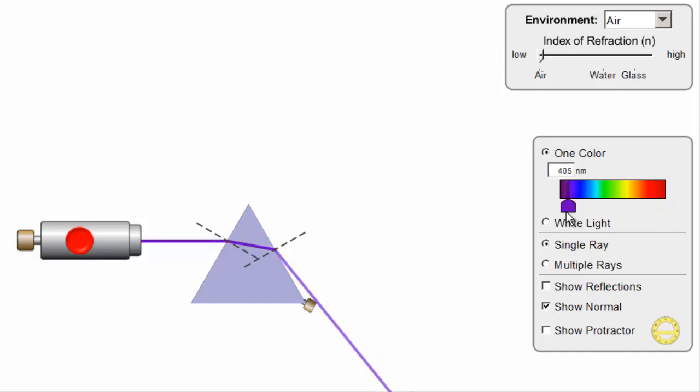If I switch this to white light, the cumulative effect is that the colors all pass through and spread out. We call this spreading out dispersion.